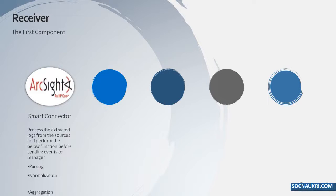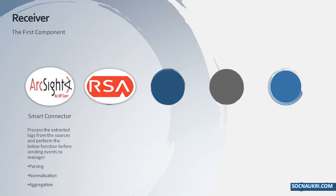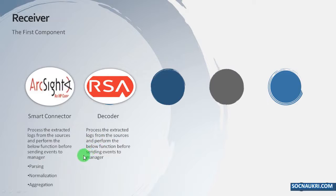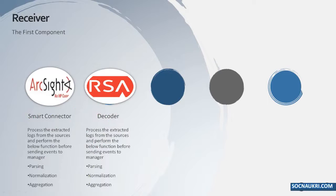In HP ArcSight, the first component of SIM architecture is called Smart Connector, which is responsible for extracting logs and performing defined actions: parsing, normalization, and aggregation on the logs, then sending those events to the manager. In RSA Security Analytics, the receiver is called Decoder, with the same responsibility of extracting logs from all devices across the network and performing aggregation and normalization. RSA has two decoders: the first is Decoder, which captures network data in packet form; the second is Log Decoder, which captures log data as events.